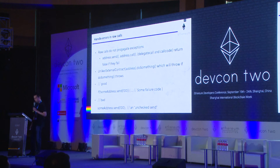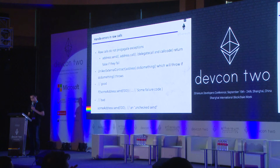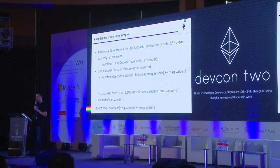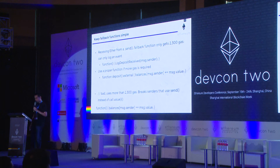Perhaps the most mature best practice is to handle errors in raw calls. Raw calls such as address.send and address.call return false if they fail, unlike invoking a method which propagates an exception. The good example is to check the return value; the bad example is an unchecked send. A tip that goes together with using send is to keep fallback functions simple. A complex fallback function is advised against because it uses more than 2,300 gas and asks callers to break the tip of using send, forcing them to use the riskier call.value.